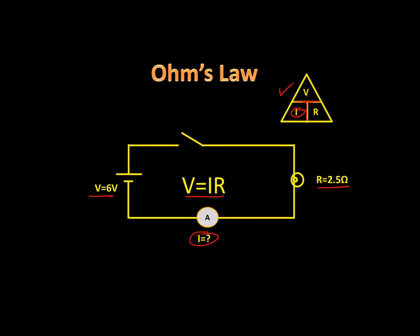If we're looking for current, the triangle gives us: I equals V divided by R. So current is equal to voltage divided by resistance. The current equals 6 volts divided by 2.5 ohms, and when we divide 6 by 2.5 we get 2.4 amperes. In this circuit the current is 2.4 amperes.